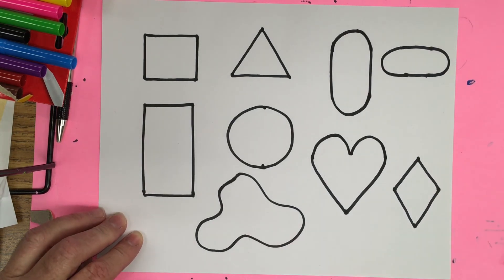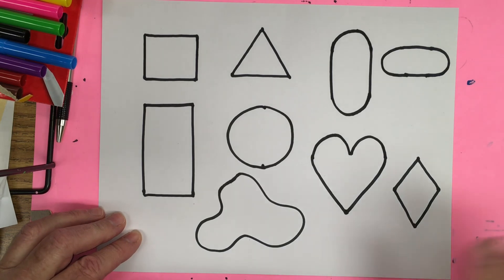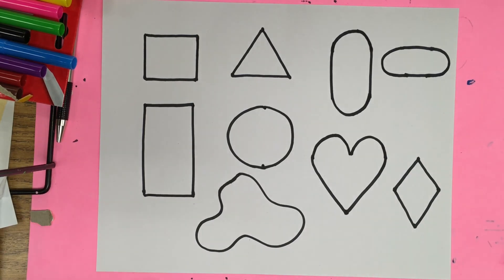Shapes are really important. If you can make a shape then you can draw almost anything by putting shapes together. You can also write letters once you learn how to make simple shapes like this and you can even make words. So shapes are really important in art and in school.